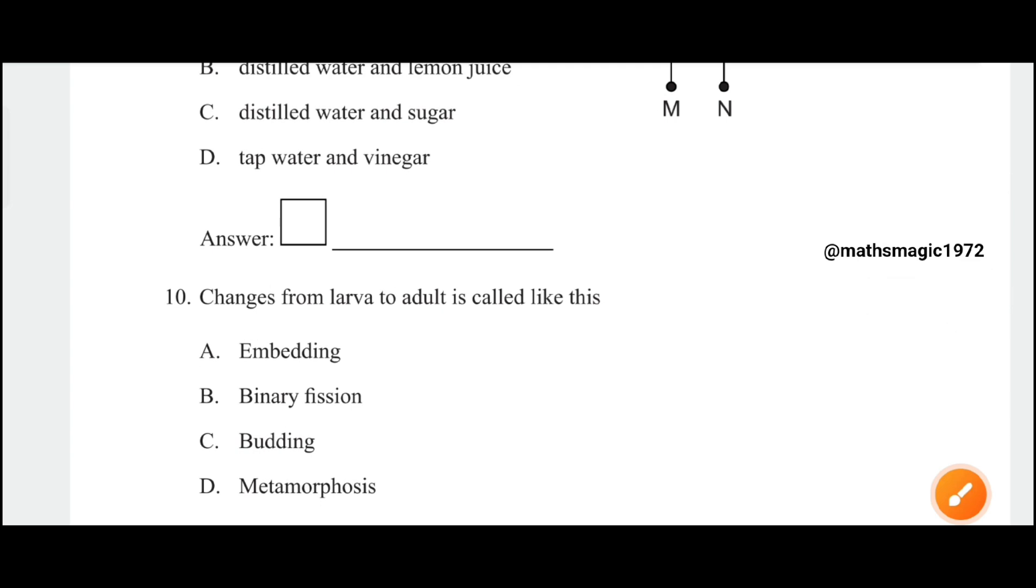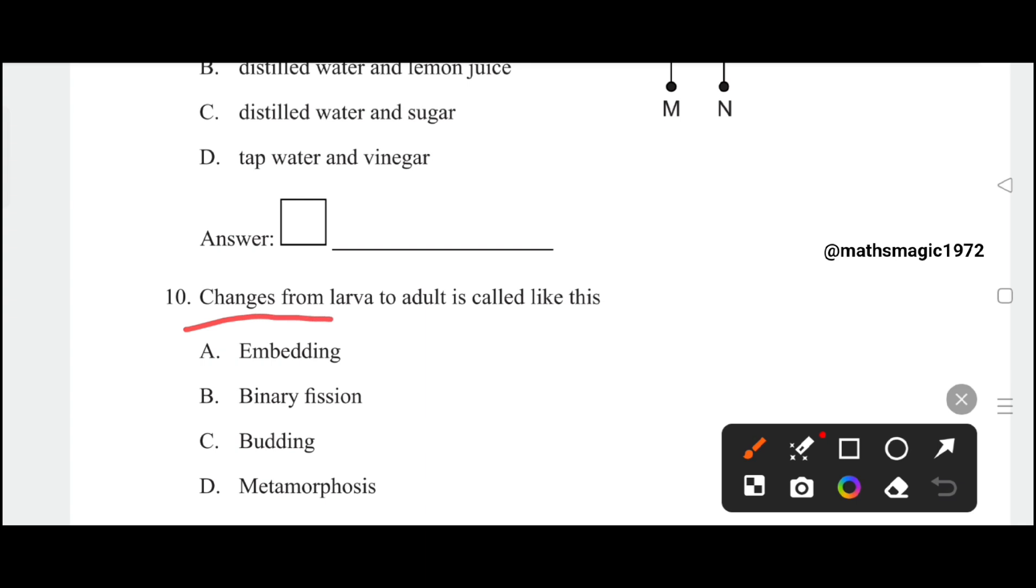Changes from larvae to adult is called - this is also an important question. Changes from larvae to adult is called metamorphosis. Option D is correct.